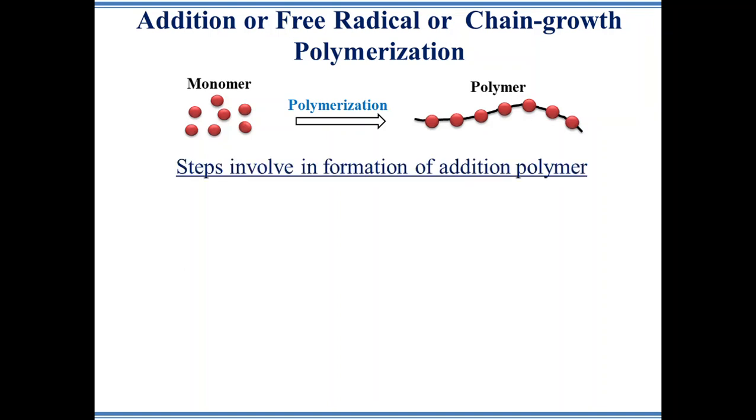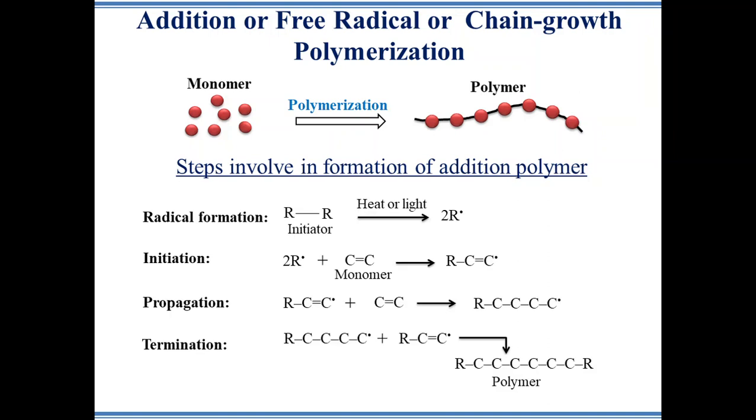Addition polymerization involves mainly three steps. First step is initiation, where a small number of monomers react with initiator molecules to form active monomers or free radicals.